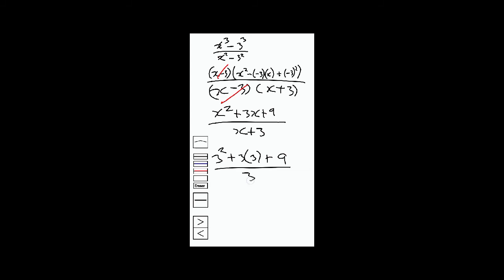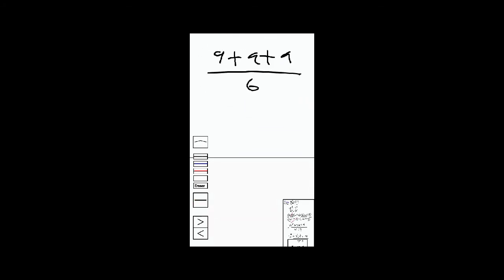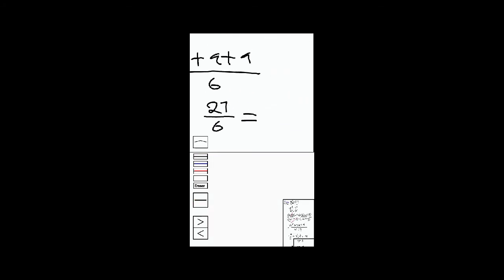Then down we're going to have 3 plus 3. 3 squared is 9, 3 times 3 is 9, plus 9, divided by 6. Then 9 plus 9 plus 9, we're going to have 27 divided by 6. Simplify that to get 9 divided by 2.